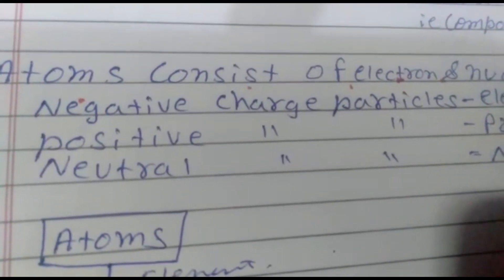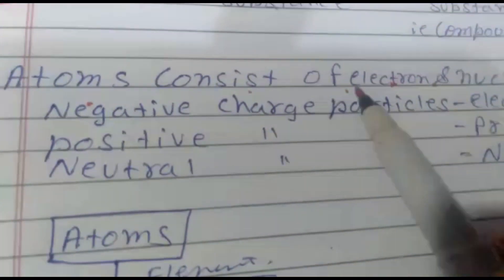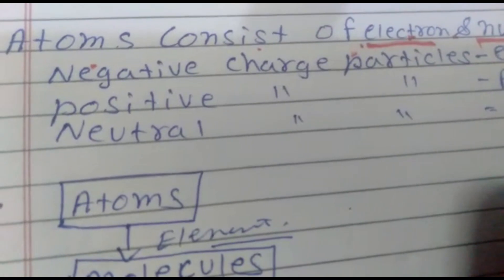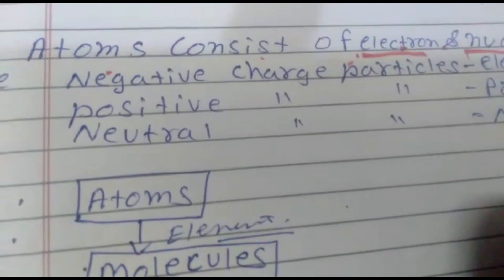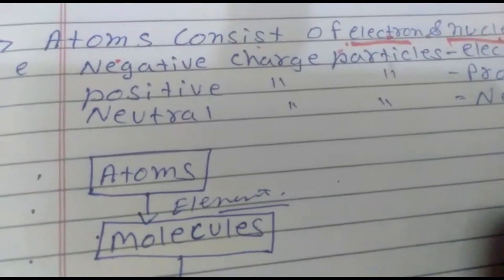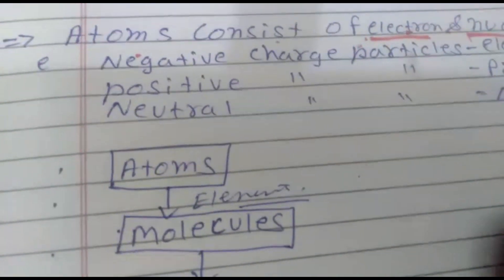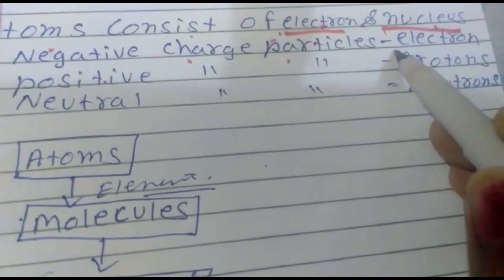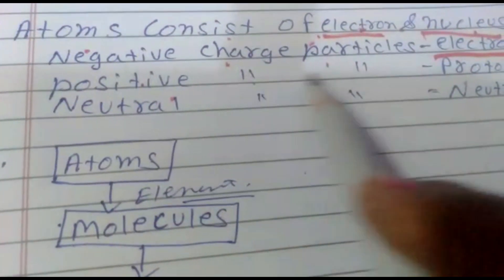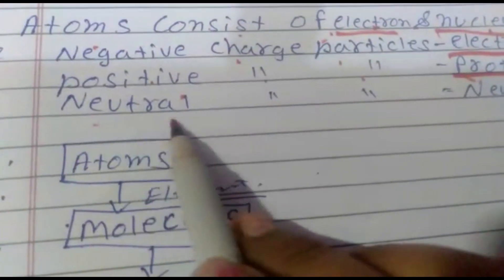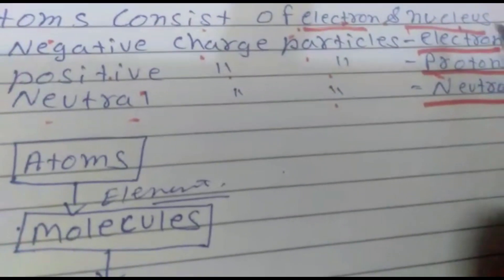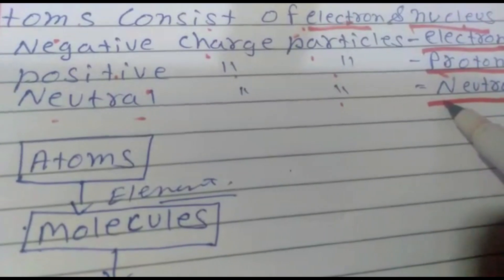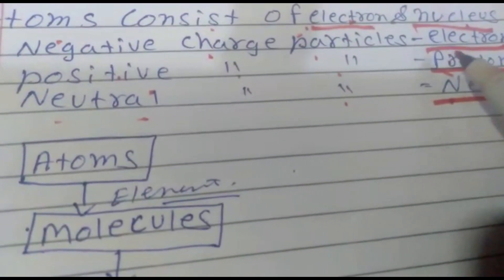Atoms consist of electrons and a nucleus. Each and every atom consists of electrons and a nucleus. The negative charge particle is called an electron, positive charge particles are called protons, and neutral particles are called neutrons. Inside the nucleus, protons and neutrons are present, while electrons are present outside the nucleus.